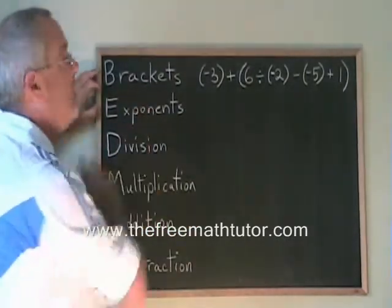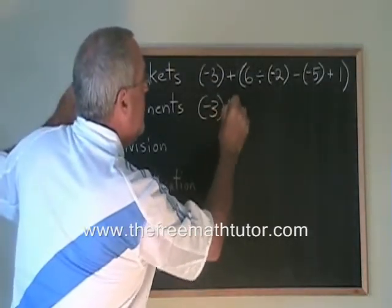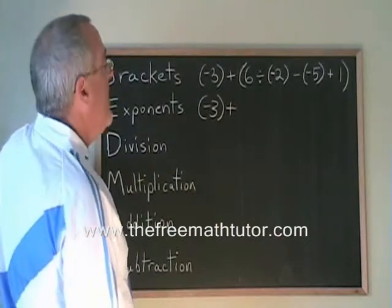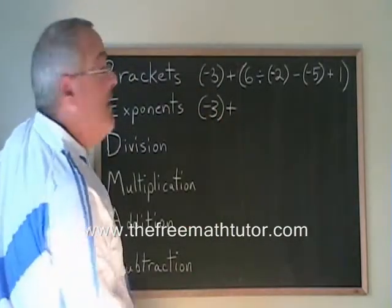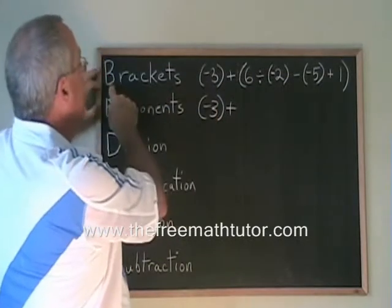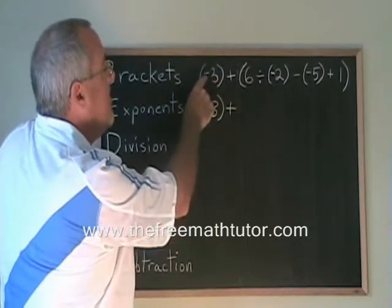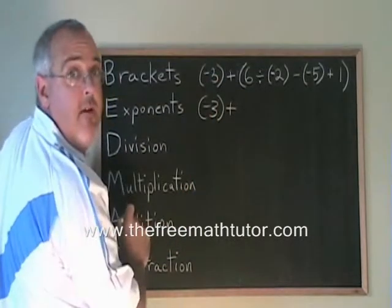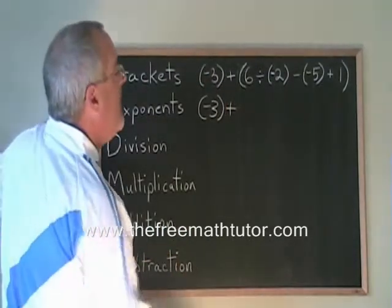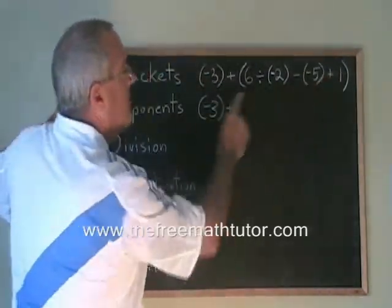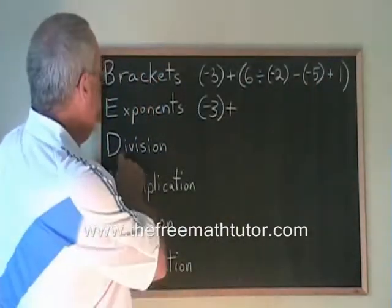BEDMAS says brackets first, so we are ignoring the -3 plus and starting our work with this bracket. Keep in mind that I put a bracket around -3, but this isn't a bracket as an operation. This is a bracket that is there just to stop me from missing this negative sign. It makes it easier to read. There's no operation inside this bracket. In the large bracket, we have divided by minus plus. BEDMAS says we have to do division first.